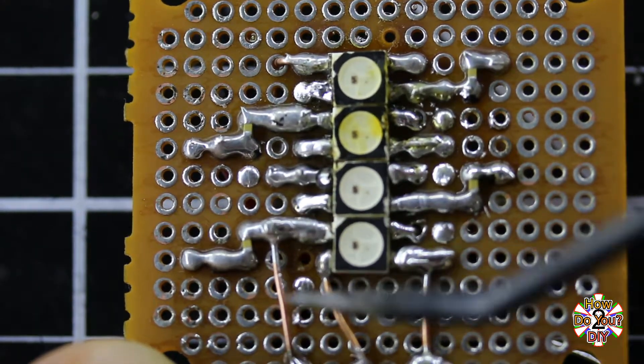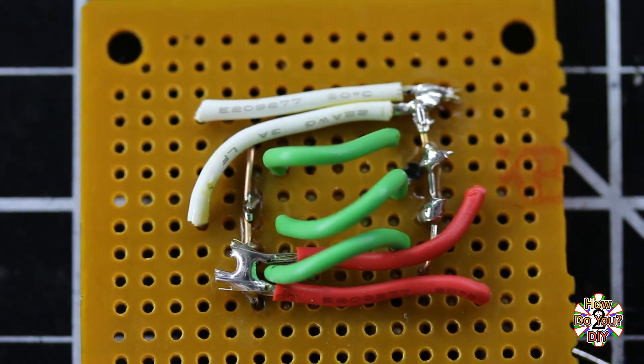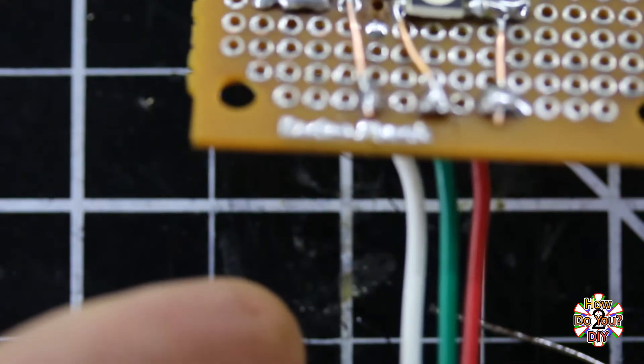I made some solder traces on this side and used some jumper wires on the other side. I've also attached a connector to the board so that I can hook up an LED controller.